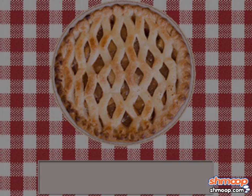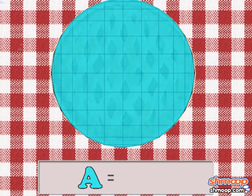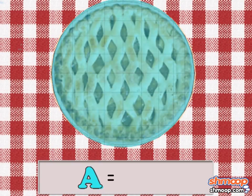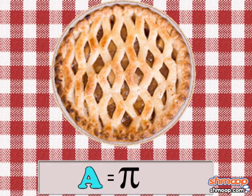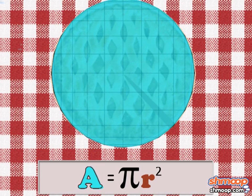But if we're trying to calculate the area of a circle, we'll need pi too. Pi times the radius squared will give us the area of our circle.